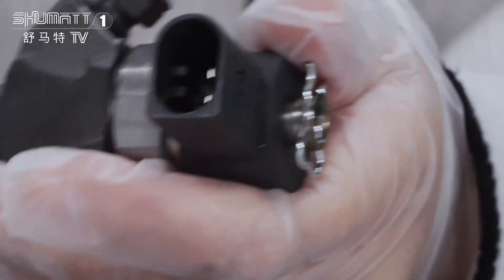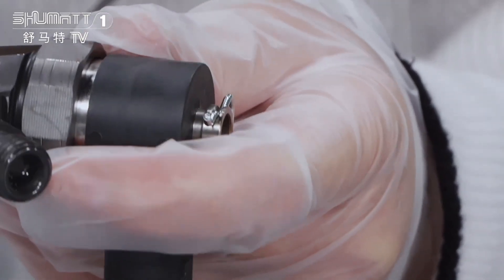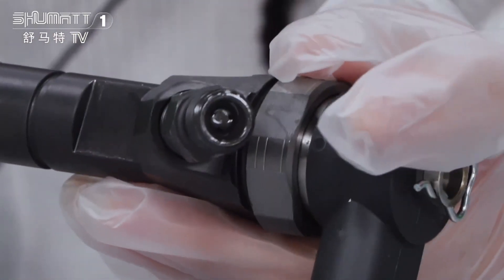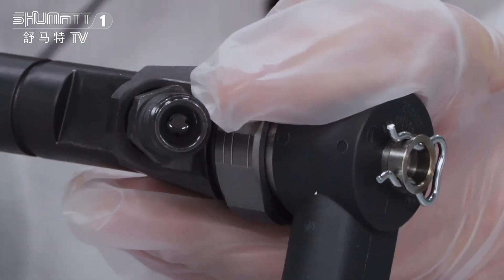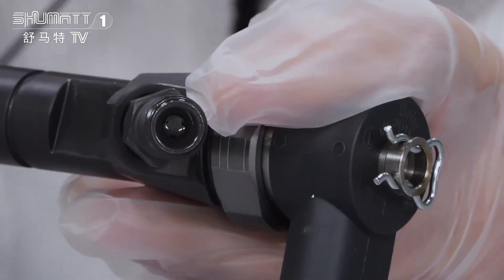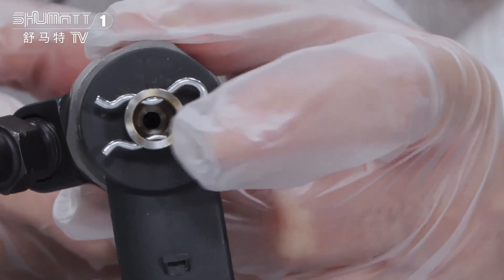And this is the plug here. You can look carefully. Inside this position, there's a triangle valve inside of it. Oil goes in from here and comes out from this side.